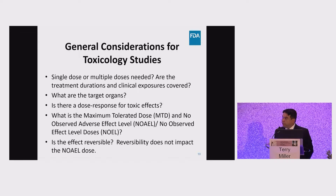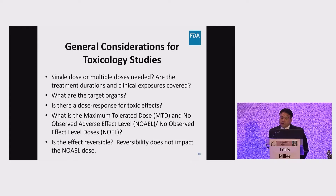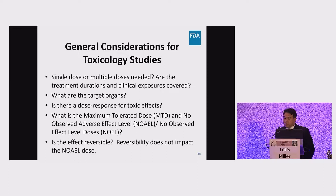The most pivotal non-clinical studies required to support early clinical trials are the single and repeat-dose animal toxicology studies. In these studies, we typically look for: Are the single-dose or multiple-dose studies needed to support the clinical trial? Are the planned treatment durations and anticipated clinical exposures covered? What are the target organs for toxicity, and is there a dose response? What is the maximum tolerated dose, the no-observed adverse effect level, and no-observed effect level? And most importantly, are these effects reversible?